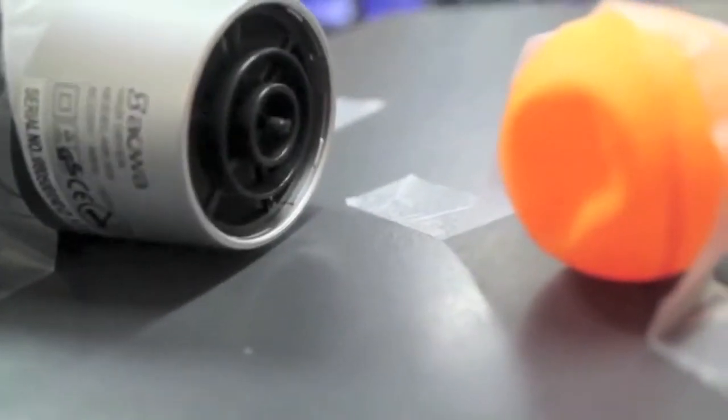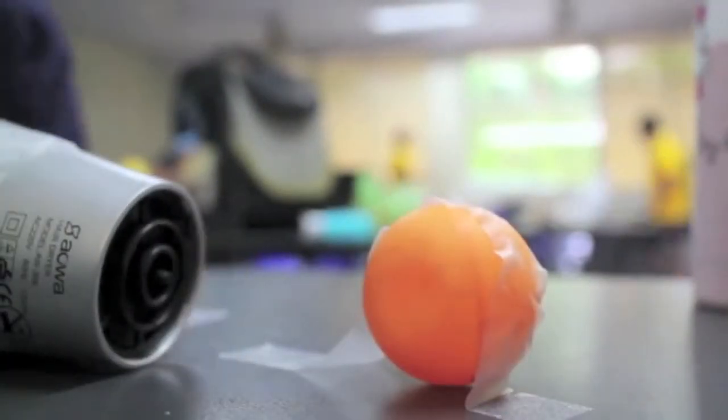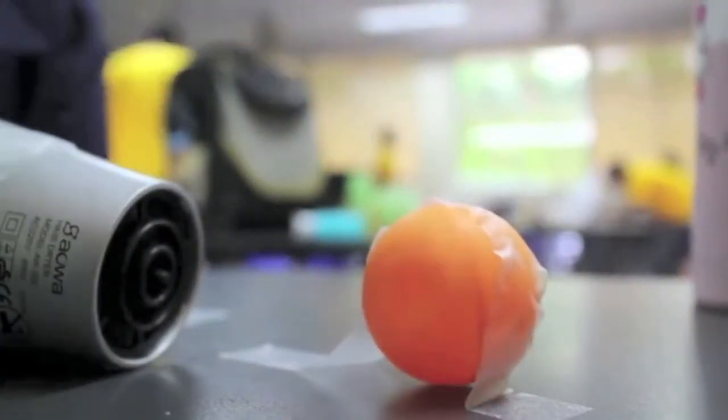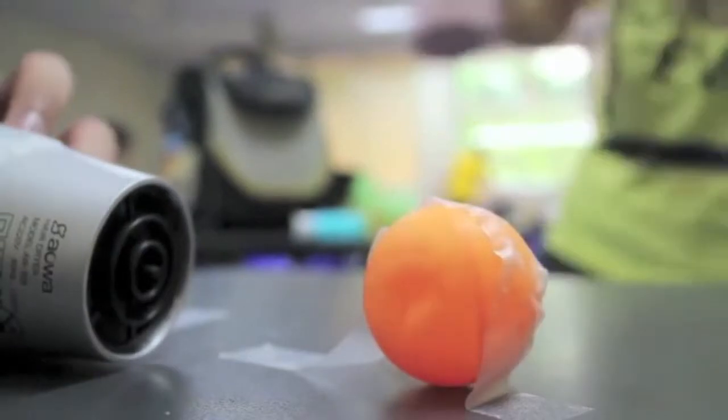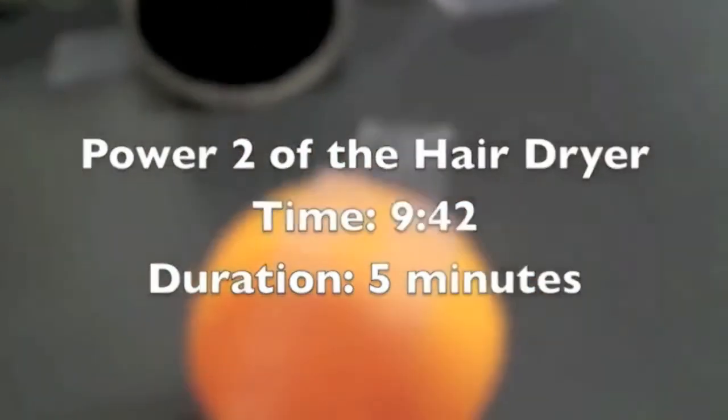As you can see, this side of the ping-pong ball is round already. Now the ping-pong ball is round. The time is 9:42, so it took 5 minutes.